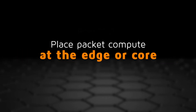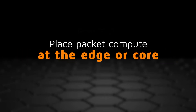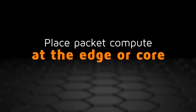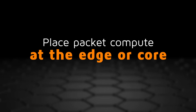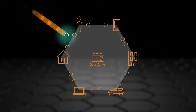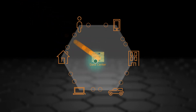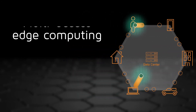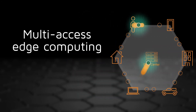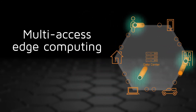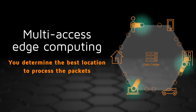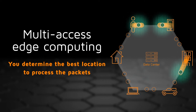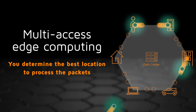In today's compute-centric world, where a packet should be processed can vary depending on the application. With Axiom, it can be in the data center or in a compute module at the edge. This multi-axis edge computing strategy offers potential efficiencies by not requiring that all processing occurs just at the data center.